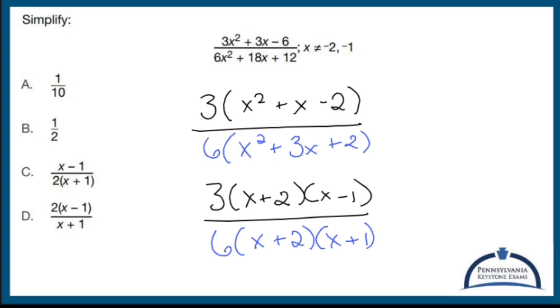But what I can do is, since I have something times something times something on the top and something times something times something on the bottom, I can eliminate any somethings that are exactly the same. But that's not all. I noticed that I have a 3 up here and a 6 down there, so I can simplify 3 sixths to 1 halves. So that gives me x minus 1 on top and 2 times the quantity x plus 1 on the bottom.